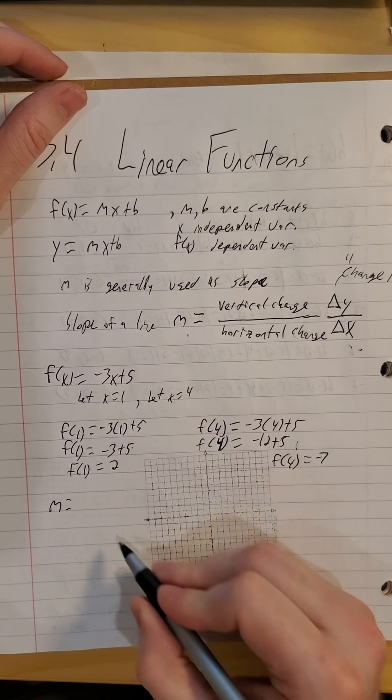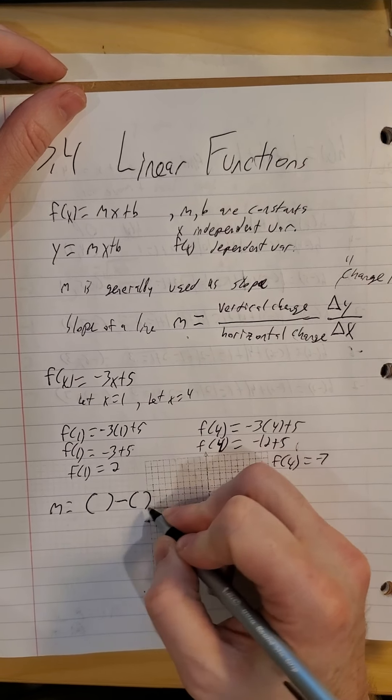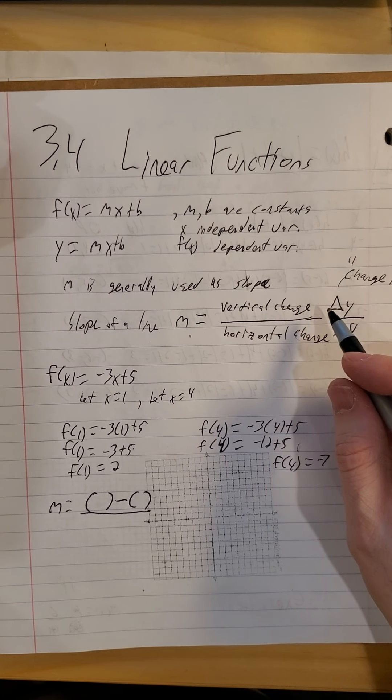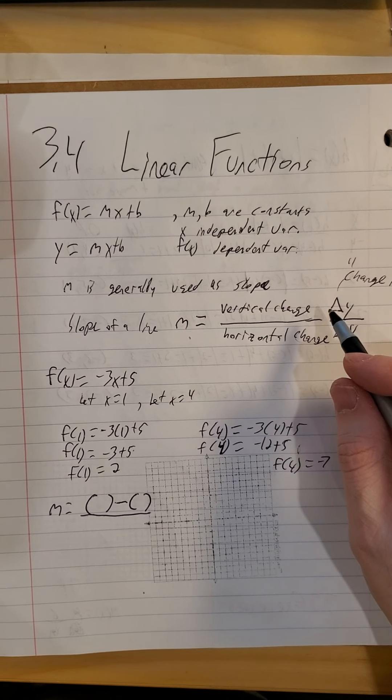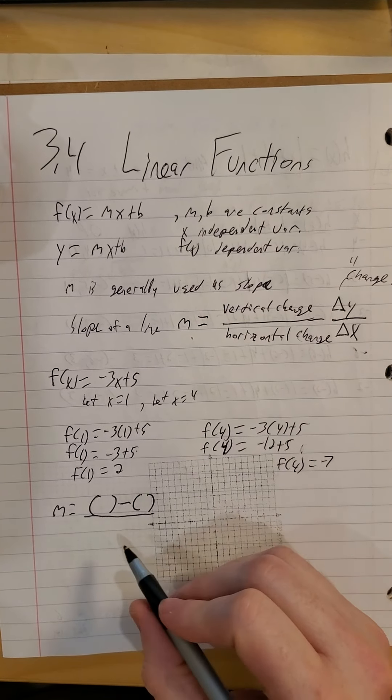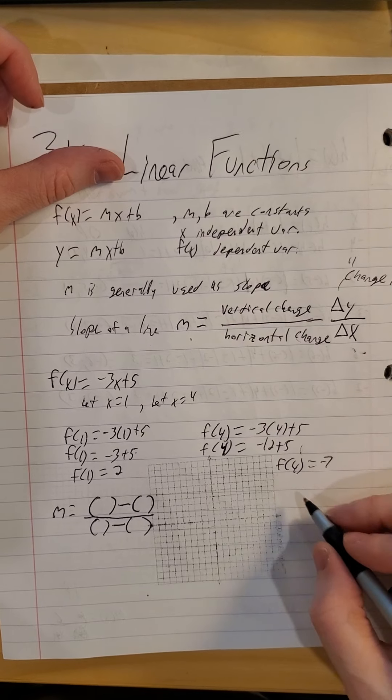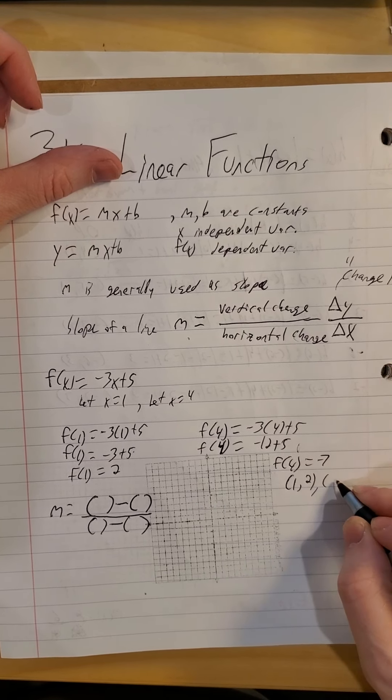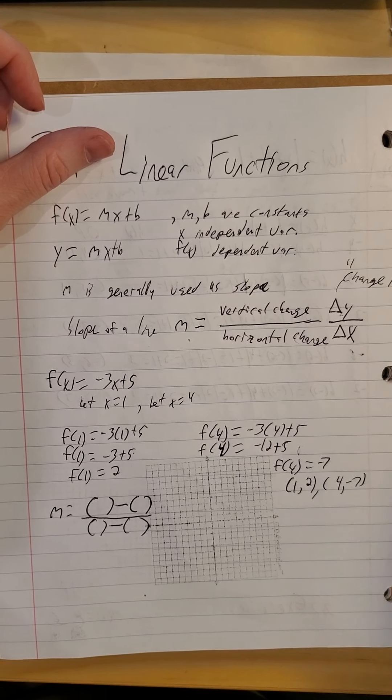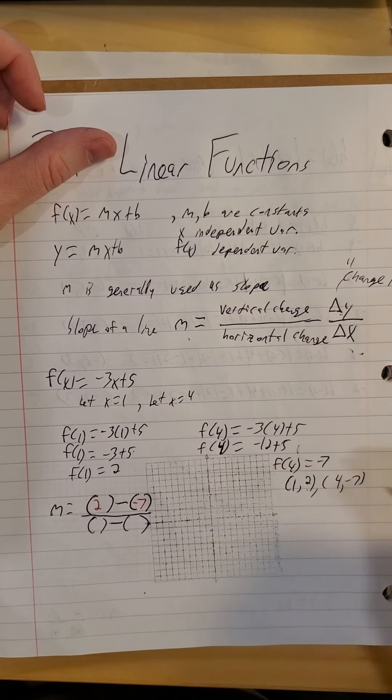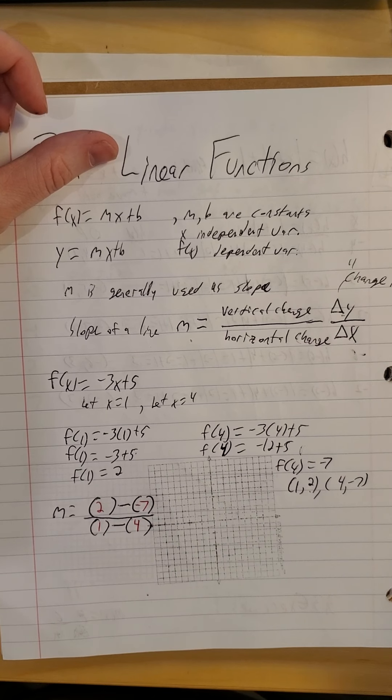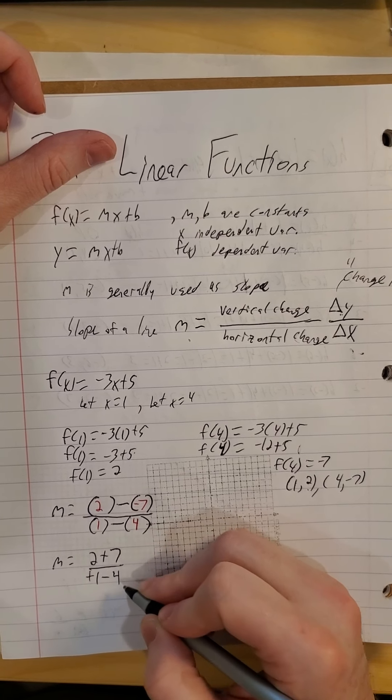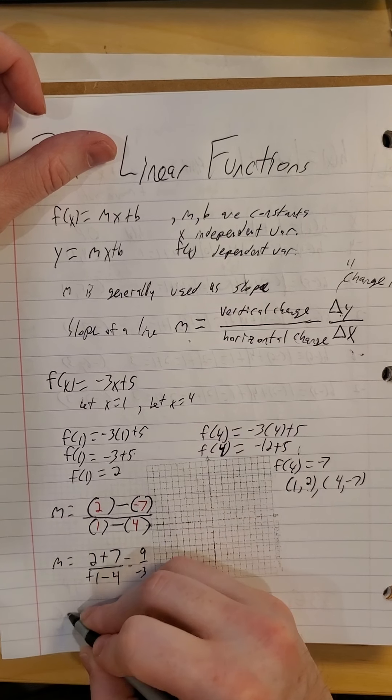So then our slope m would be the change in y. Change in is a subtraction problem. If you changed from 12 years old to 16 years old, you aged 4 years. You're doing a difference, a subtraction. So our ordered pairs that we're working with, with this example we have 1, 2 and we have 4, negative 7. So remember change in y over change in x. So our y values, we have a 2 and a negative 7. Our x values, I have a 1 and a 4. So our slope m, 2 minus negative 7 over 1 minus 4. So that is 9 over negative 3, so a slope of negative 3.